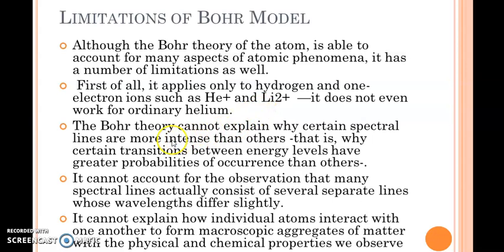The second limitation is that this theory cannot explain why certain spectral lines are more intense than others. When we observe the spectrum of mercury or hydrogen, we have all kinds of lines with different intensities, some bright, some dim. The theory cannot explain the reason for this.